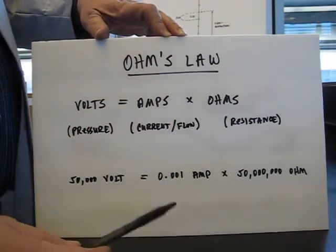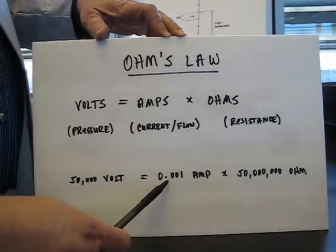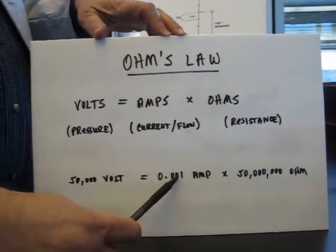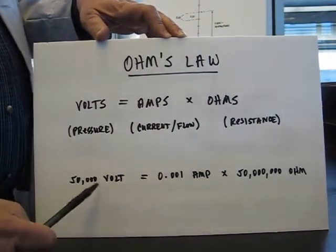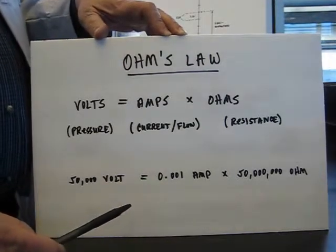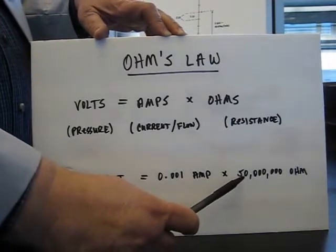Well according to Ohm's law volts is equal to amps times ohms so we could still dissipate a current of one milliamp. Milliamp is a lot of static you know static voltages are very high static currents are very very small so even though the rubber roller is very resistant it's still conductive enough to dissipate static.